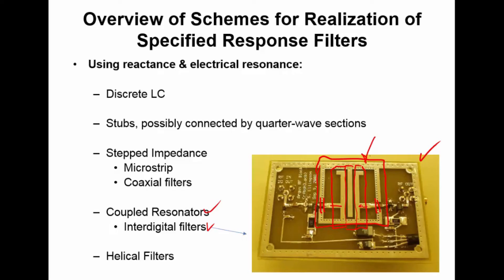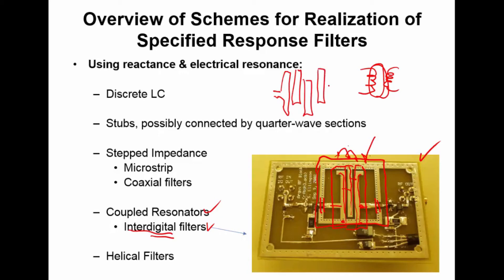We connect to the stub at a specified location; one end of the stub is short-circuited and the other end is just dangling. The way this structure works is that these stubs are electromagnetically coupled to each other — the first and second stubs talk to each other, and the second and third stubs talk to each other. This is quite analogous to a transformer, where instead of magnetic fields linking coils, we have electromagnetic fields linking these interdigital structures — 'digital' in the sense of fingers, not ones and zeros. The arrangement of the stubs gives the electromagnetic coupling that implements the filter structure.